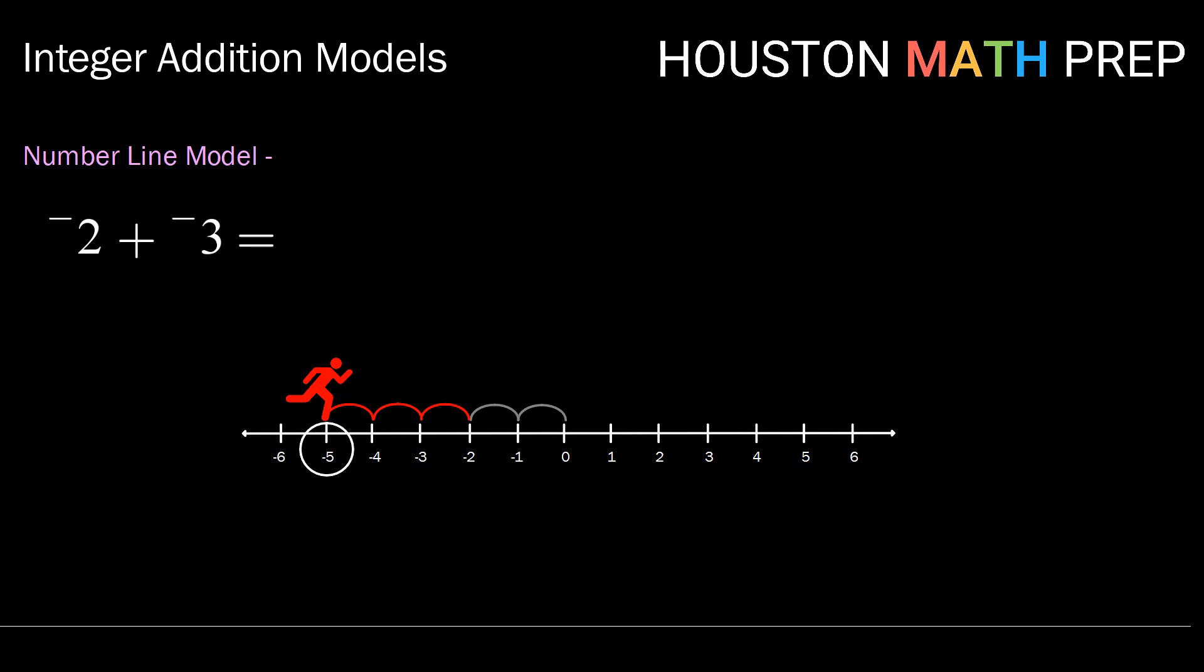Once we finish taking all of our steps, we'll note that we have landed at negative five. So negative two plus negative three equals negative five.